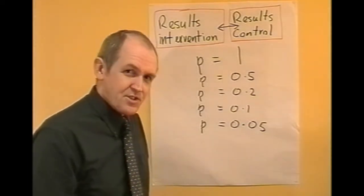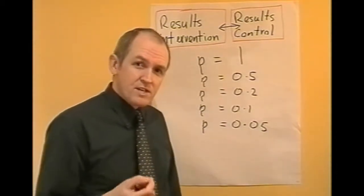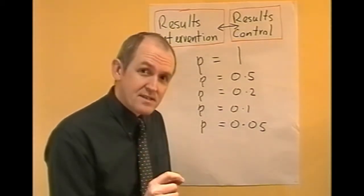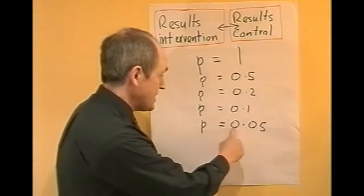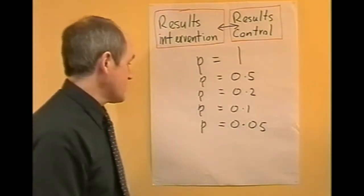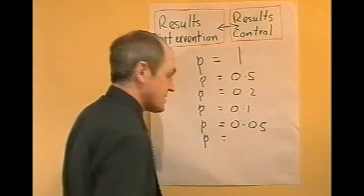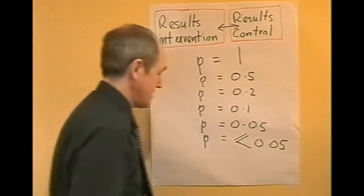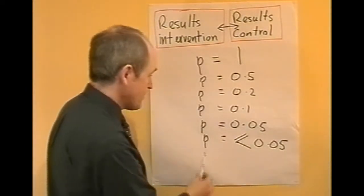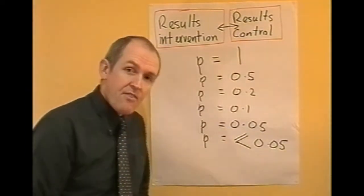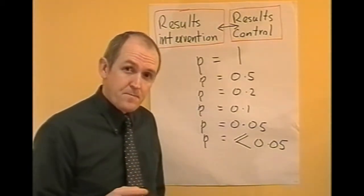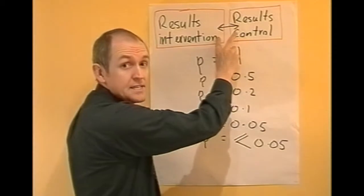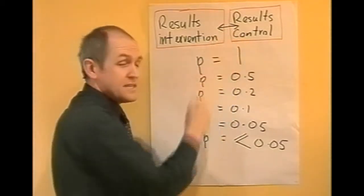As a convention — and there's no fundamental reason for this, it's just a convention — a researcher can claim that a result is significant and can use the term 'significant' if the p-value is 0.05 or less. When p is equal to or less than 0.05, then and only then can the researcher claim that the result is significant, and that any difference between the results of the two groups is actually a genuine difference.